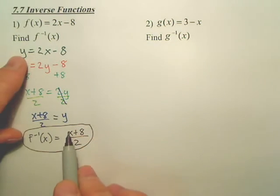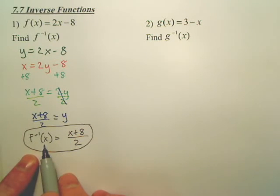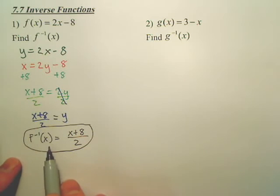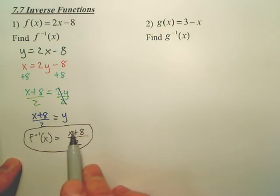Basically, I changed it to y and then I changed it back. Y is a little bit easier to write than f to negative 1 of x. This is saying the inverse of the function is this.